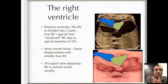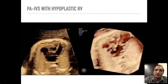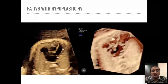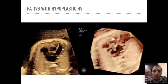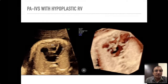So, these are the three ways by which you differentiate Ebstein's from tricuspid valve dysplasia: the level of insertion of the tricuspid valve, the origin of the TR jet on color, and the size of the right ventricular cavity. There is one more method which we haven't discussed for the sake of simplicity.